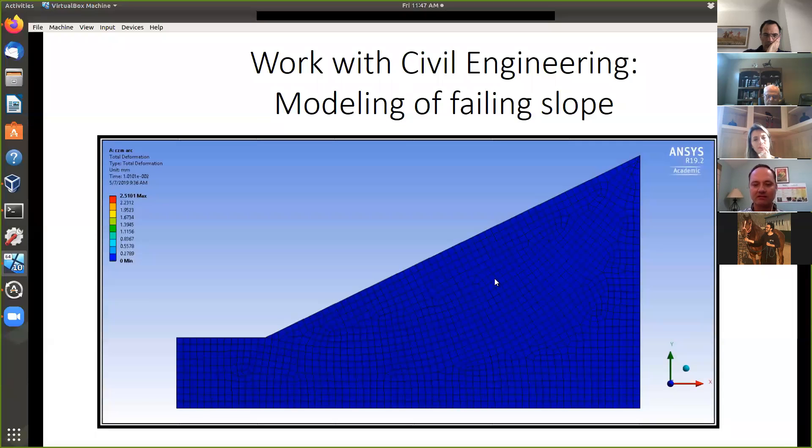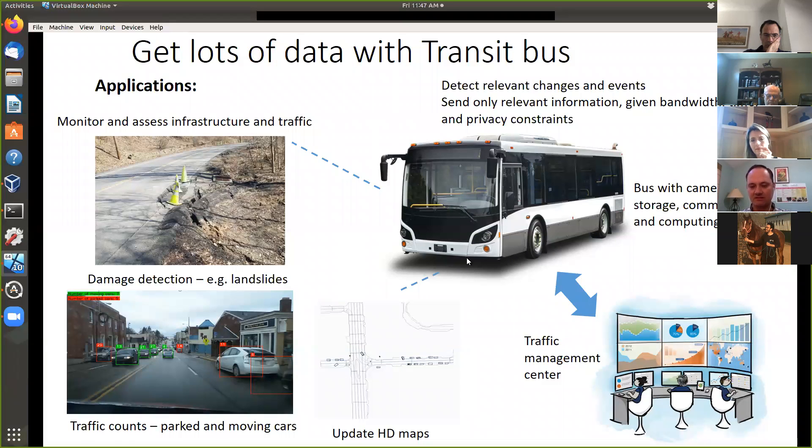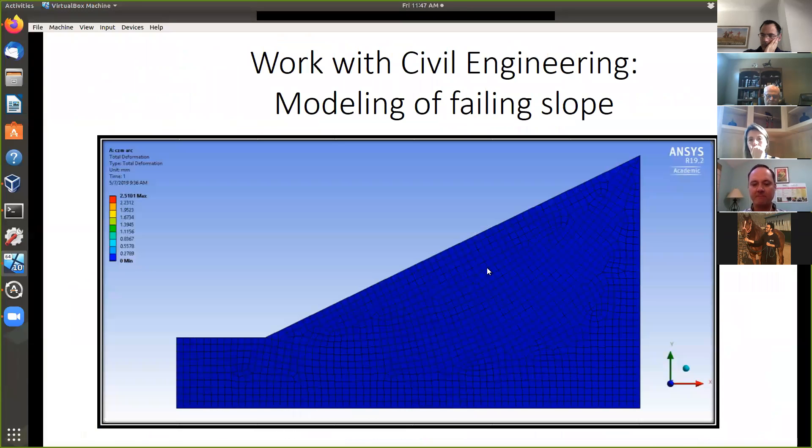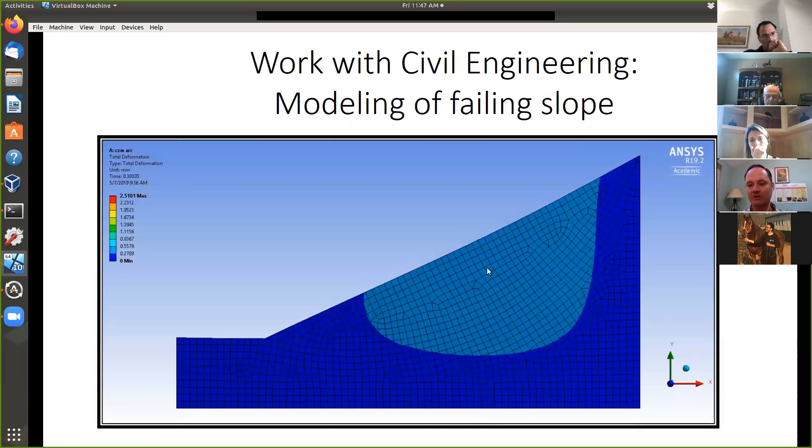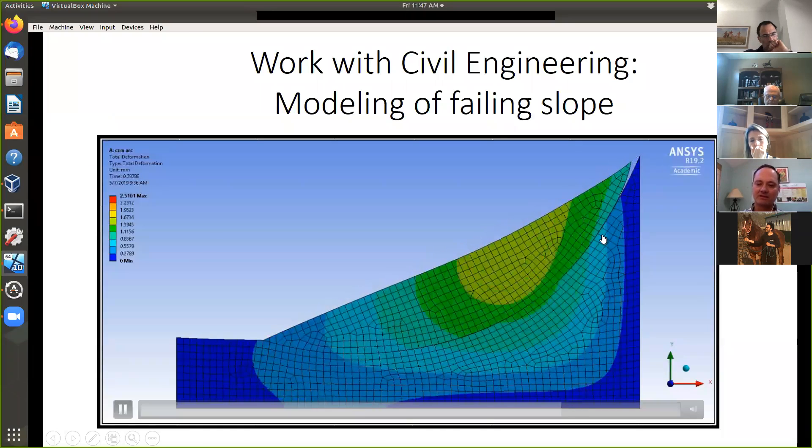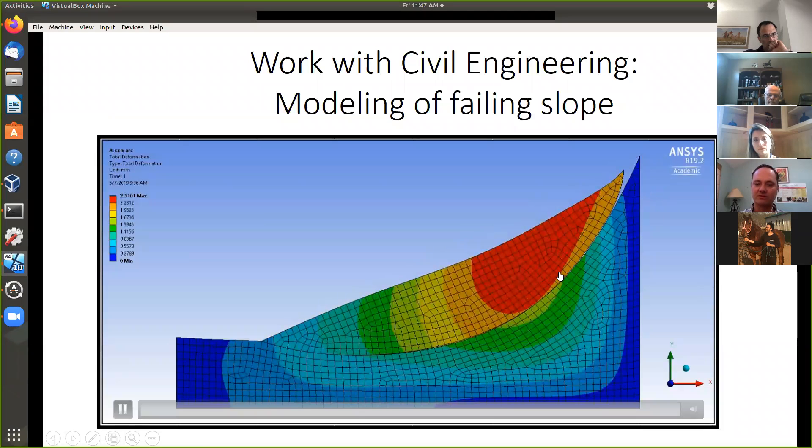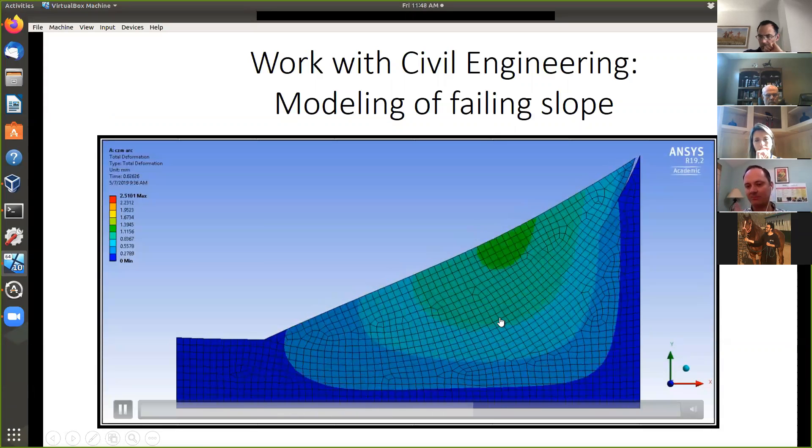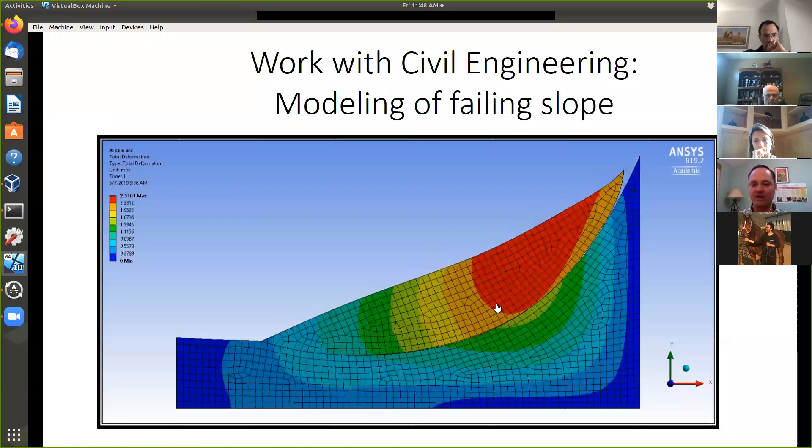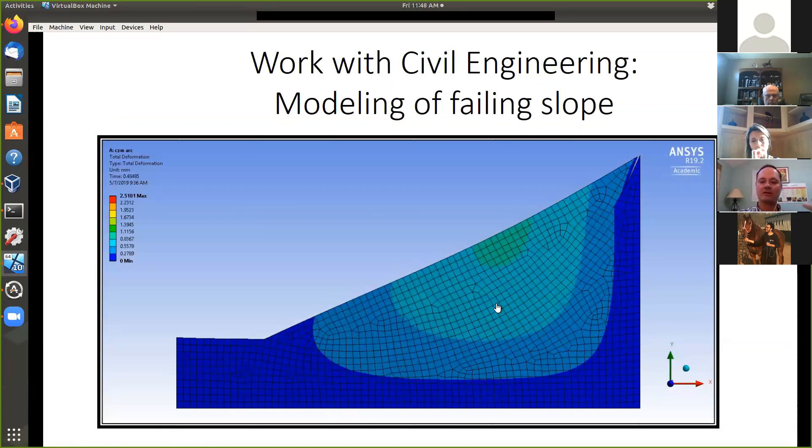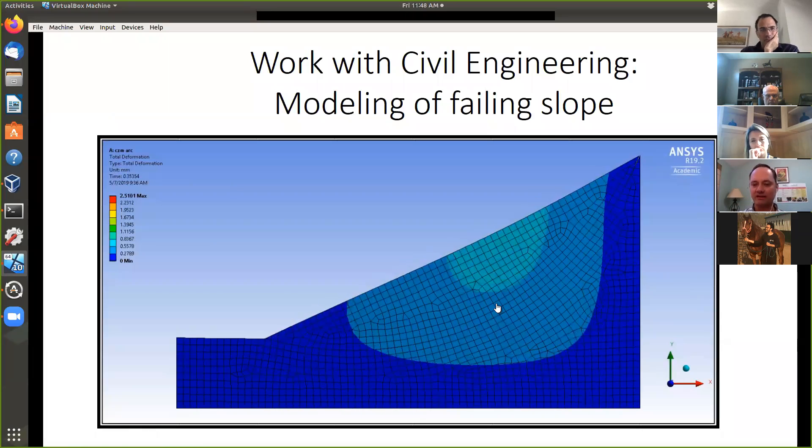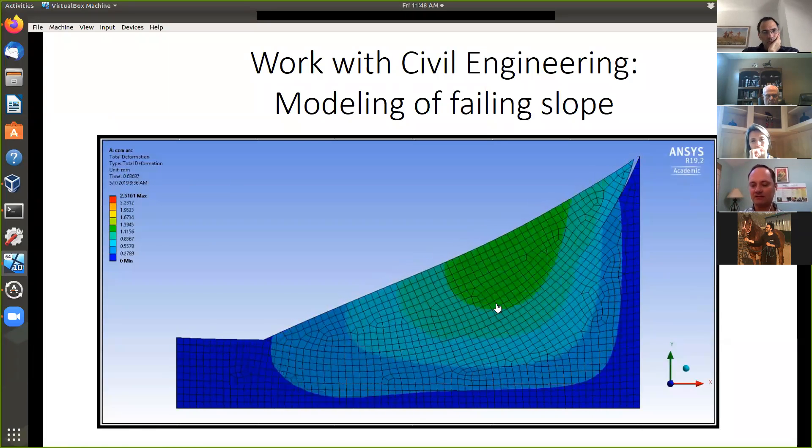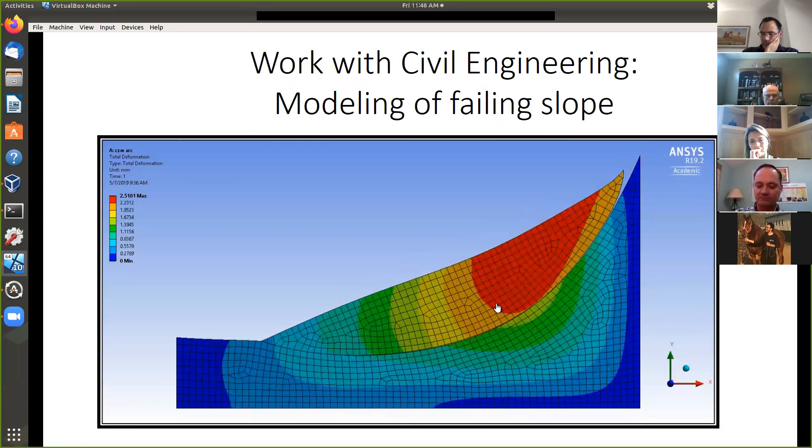This is finite element analysis of a slope. A master student has been working on it. This shows you the development. There's the surface where the slide happens, and the colors indicate the displacement. What we hope is that we can, with the real world data and this model, analyze the landslide.